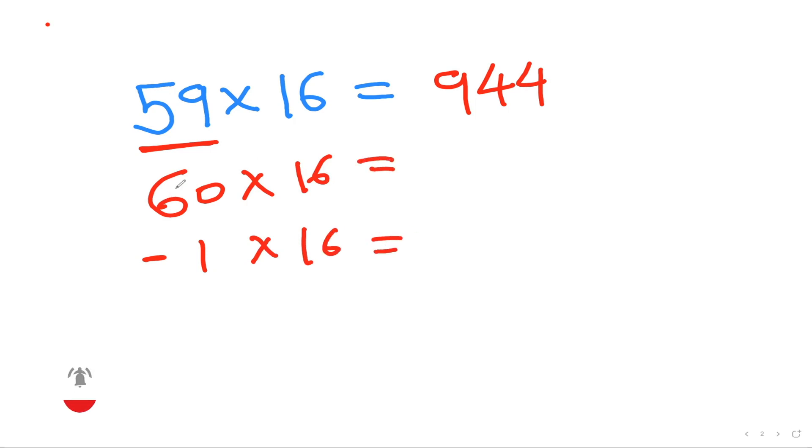Now 16 times 6 are 96. So 960 and 16 times minus 1 is minus 16 and that gives me 944. Is it not cool?